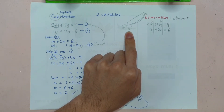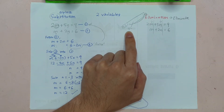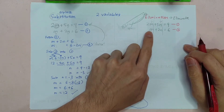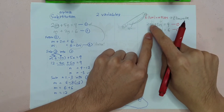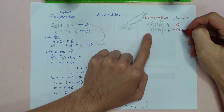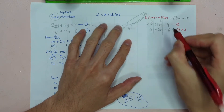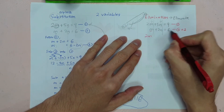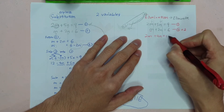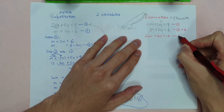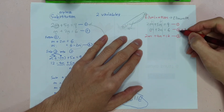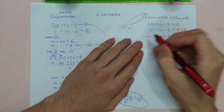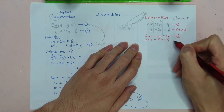In order to eliminate, you need to make the coefficients match. I select M, and I multiply the whole equation 2 by 2. So M times 2 gives 2M, plus 2N times 2 gives 4N, and 6 times 2 gives 12. This becomes a new equation 3. Then I rewrite equation 1: 2M plus 5N equals to 9.